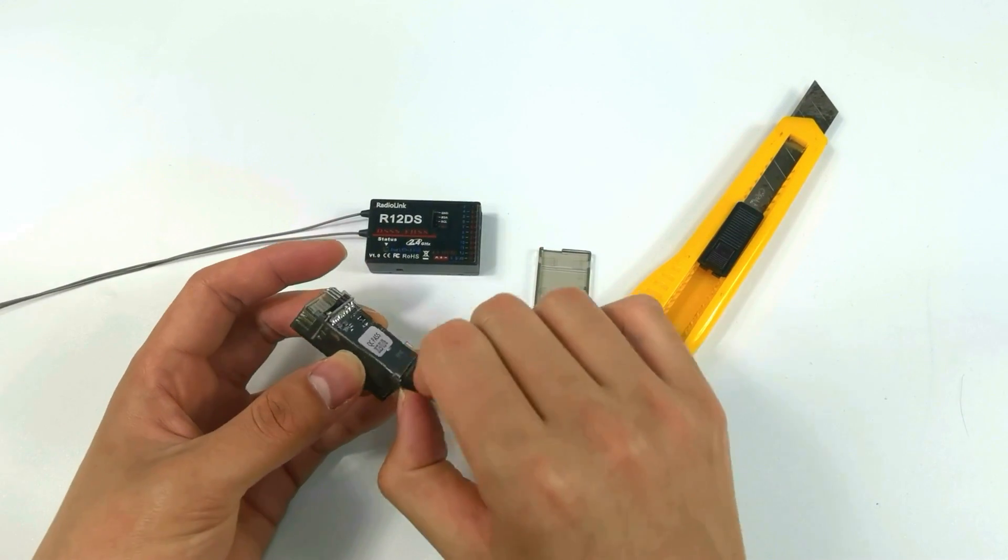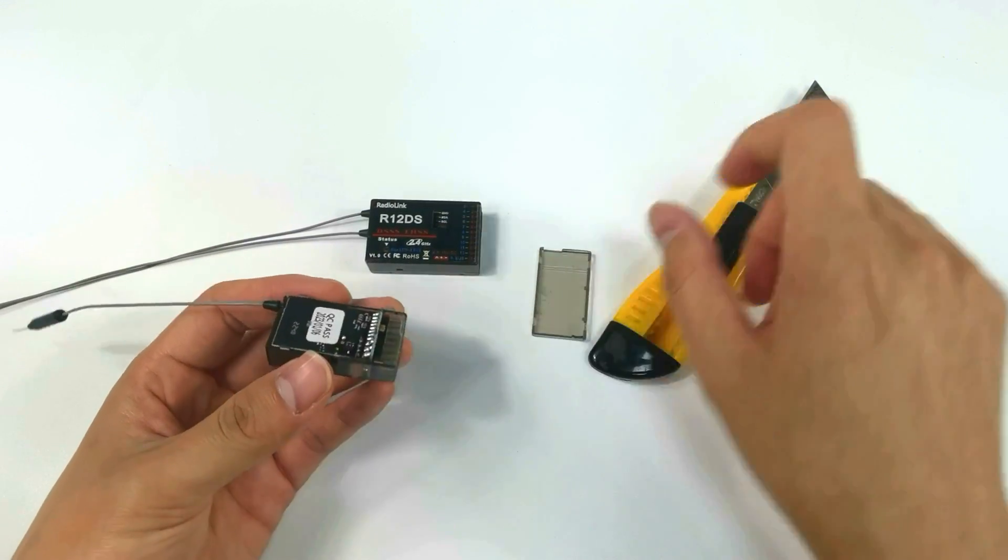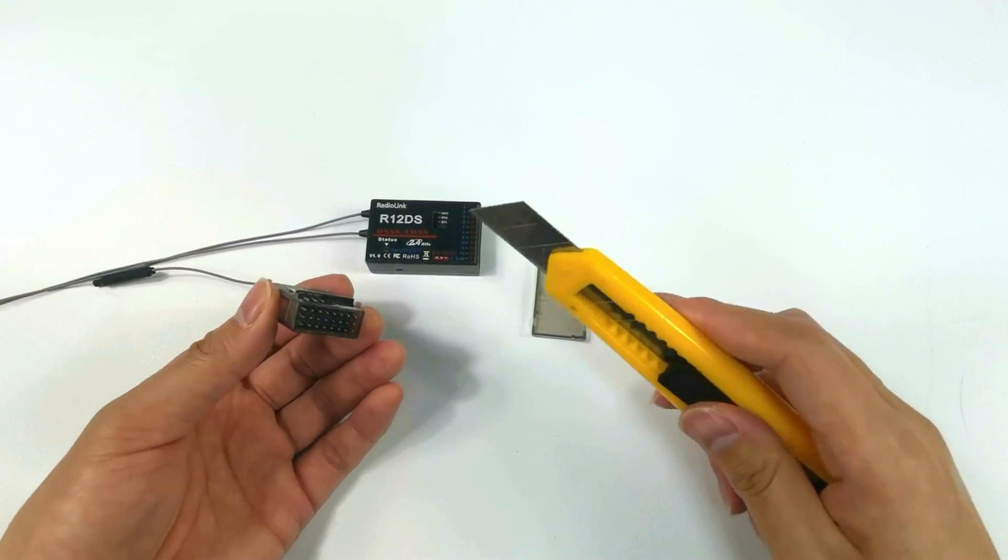Remove the cover. The board of the receiver cannot be taken out now because there is a plastic stripe on the shell.